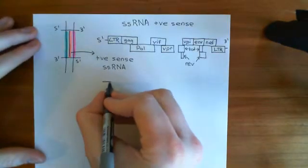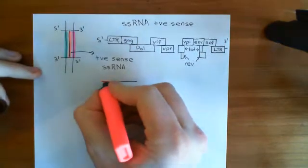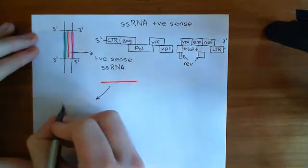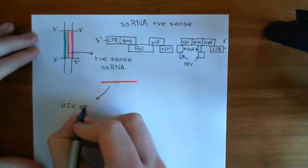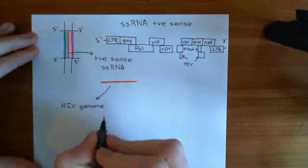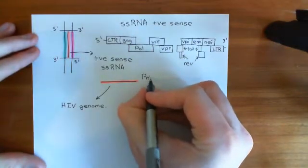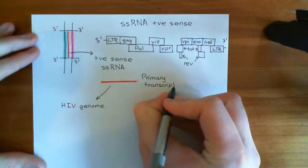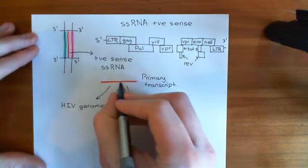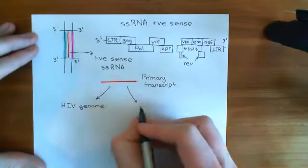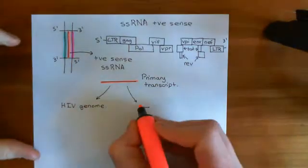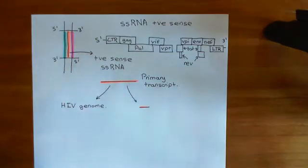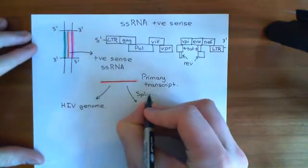We now have this primary transcript, and we understand that the primary transcript can be used as new HIV genomes. Some of them are going to be used for new HIV genomes, but some of them are also going to have to be used to actually make the proteins. So to actually make the proteins, what we're going to have to do is splice up the primary transcript — cut it up, and make final pieces of RNA which will be much smaller, and will just include little bits of this. This is how we can make the different proteins, by splicing the primary transcript up into different bits and using the different bits.